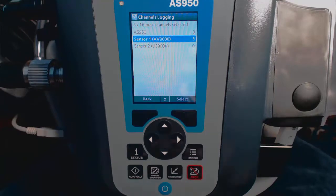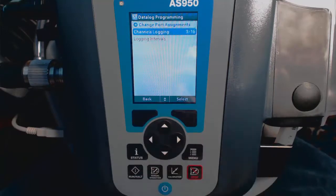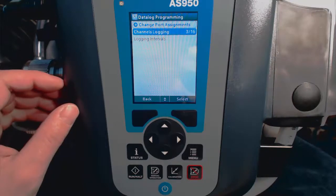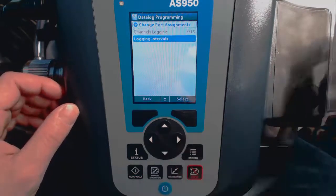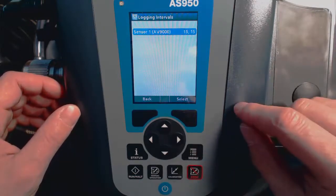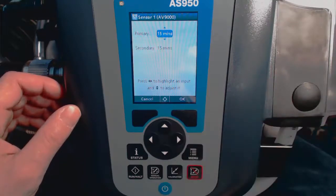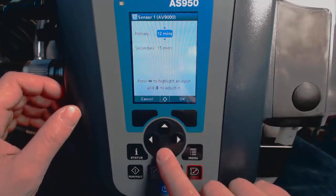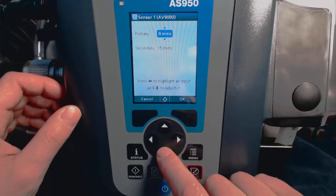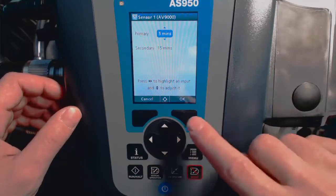Now we'll want to set up the measurement frequency or logging interval. Choose Back, then select Logging Interval, and then select the sensor that you want to set up the logging interval for. Now we'll set up our logging interval. When you're happy with that, select OK.